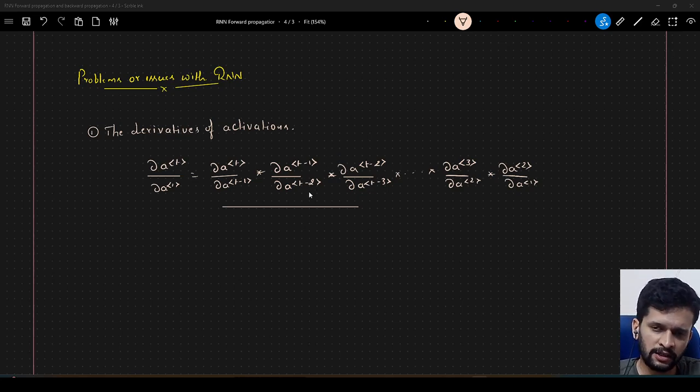So, as you have seen in my video with respect to backpropagation, we have a term wherein we calculate the derivatives of activations, right. So I have written that down here: derivative of activation at time step t with respect to derivation of activation at time step 1. Why does this affect?